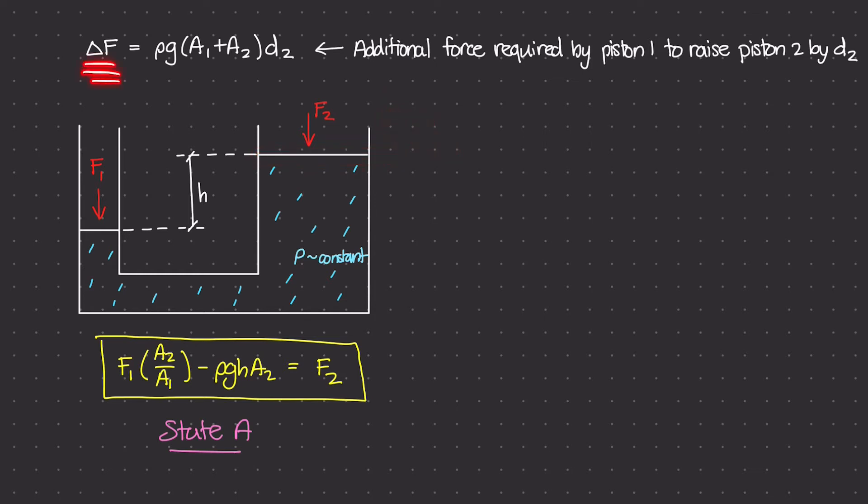So this delta F is an additional force that we're going to apply over here. So what I'm going to do is I'm going to copy this diagram over to the blank side here, and I'm going to call that state B. And I'll explain why, and hopefully the pictorial representation of what state B looks like will help us derive this equation.